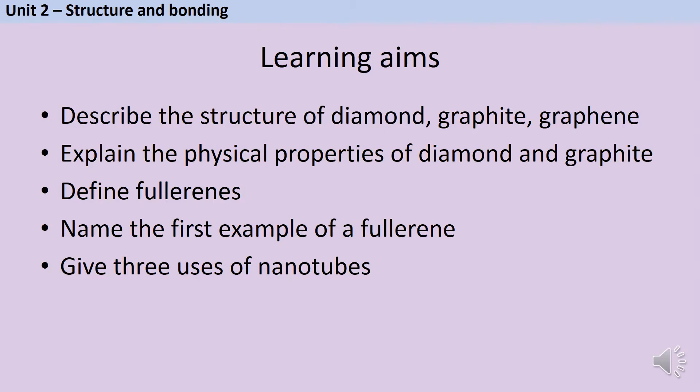In this video, we'll describe the structure of diamond, graphite and graphene, and use this to explain the physical properties of diamond and graphite. We'll explain what we mean by fullerenes, including nanotubes, and then name the first example of a fullerene and give three uses of nanotubes.